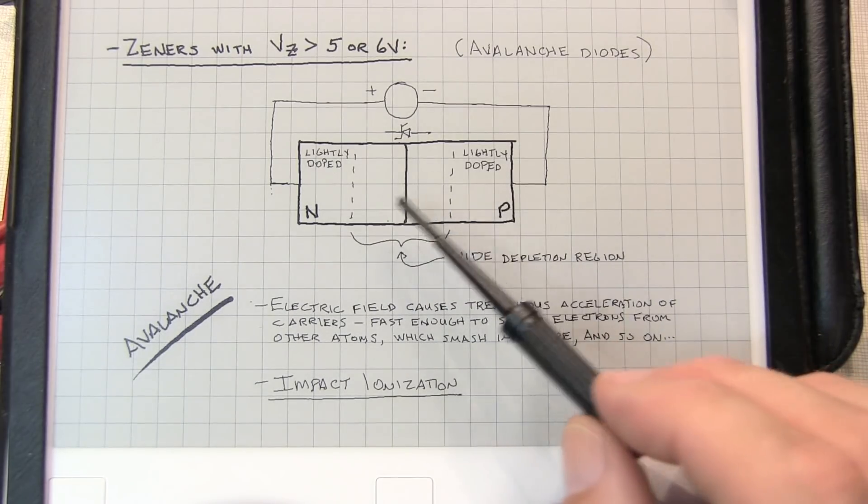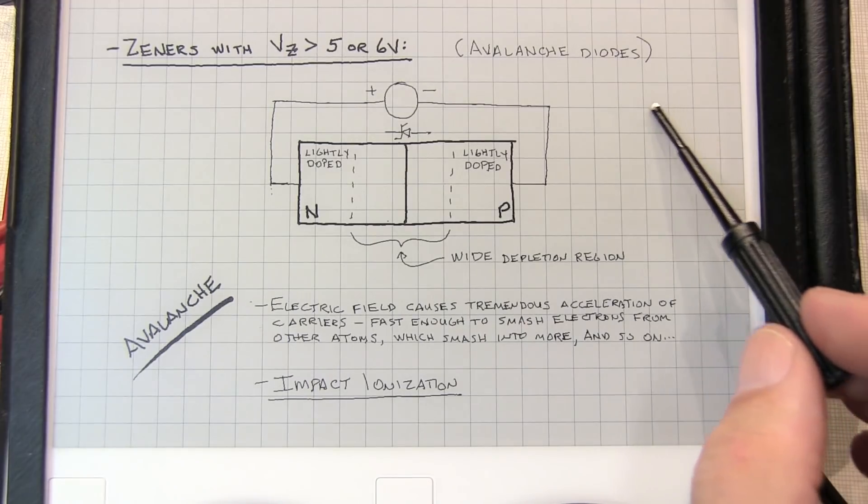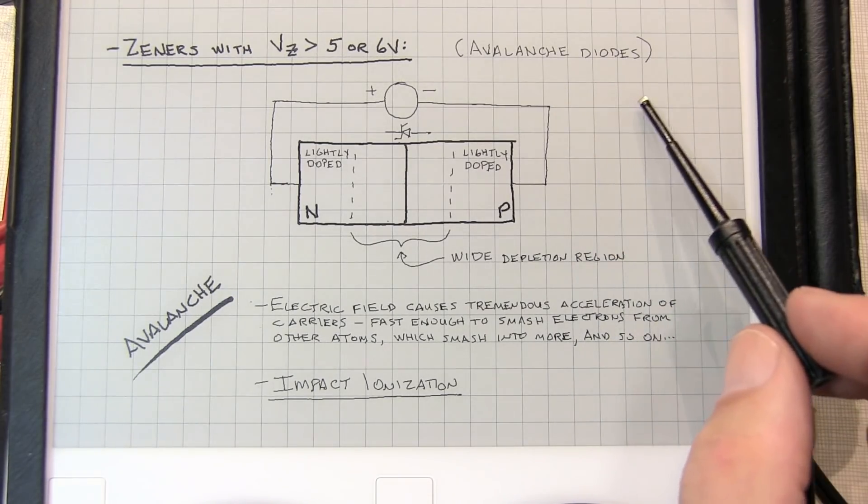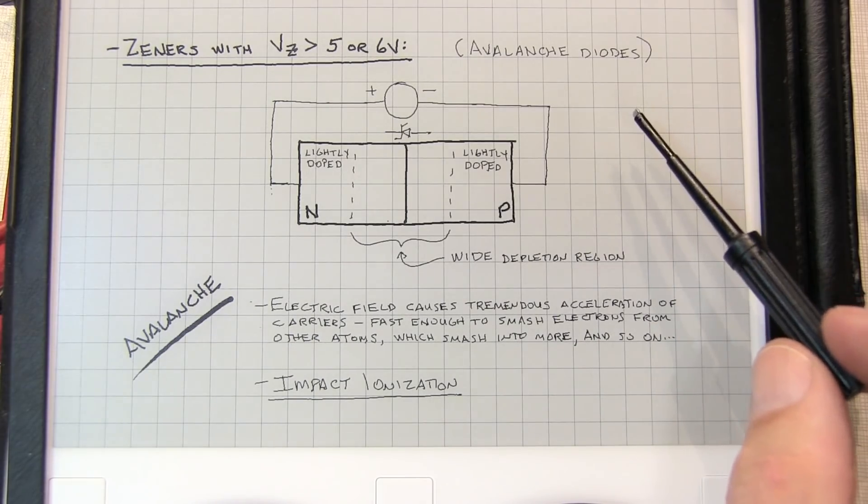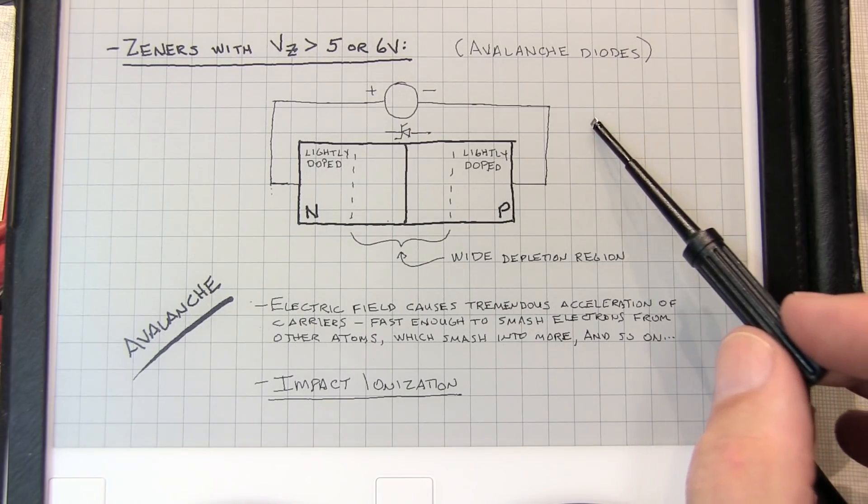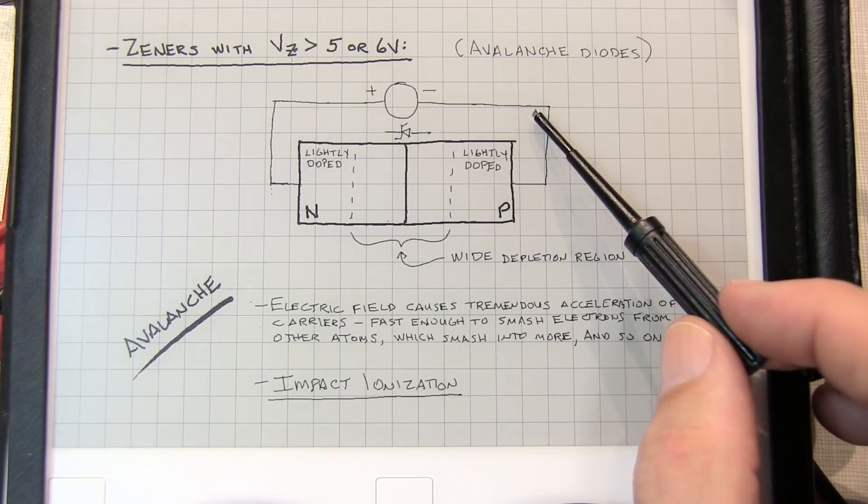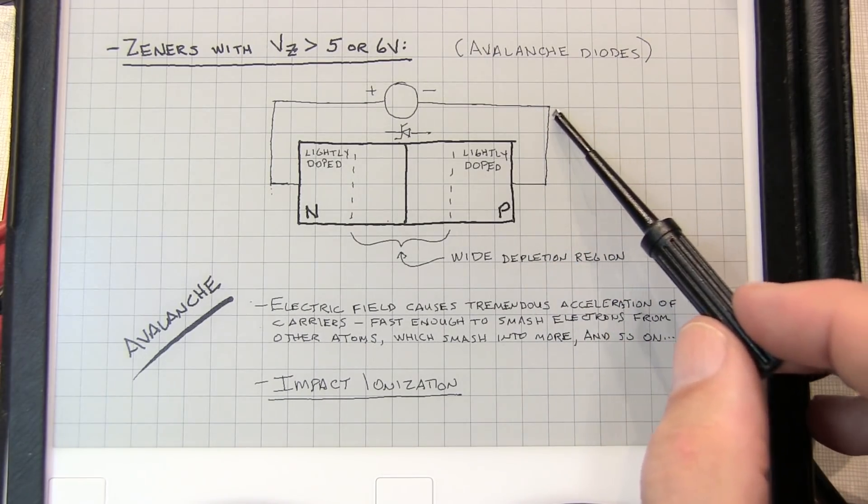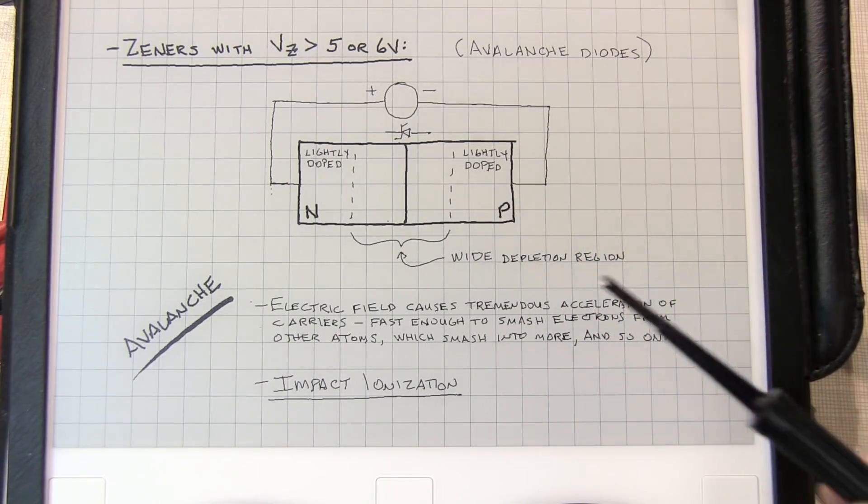The one advantage to this type of operation is that this characteristic of the reverse turn-on is actually very sharp. We'll take a look at this on the curve tracer. As you bring the bias voltage more and more negative, you reach a point where you turn a corner, it's almost like a very sharp corner, and boom, you're conducting. You don't have that soft transition region like you do in the true Zeners.